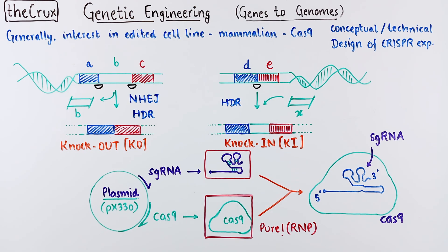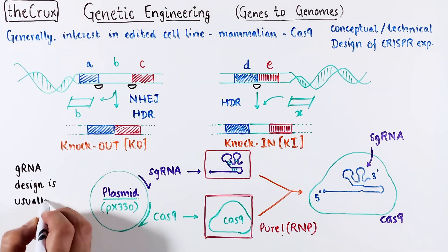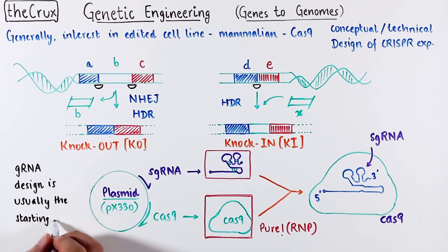The Cas9 is a fixed component of a CRISPR experiment. The targeting guide RNA changes, and its design is typically the starting point of an experiment. I have a whole video on guide RNA design, and I have linked it below.